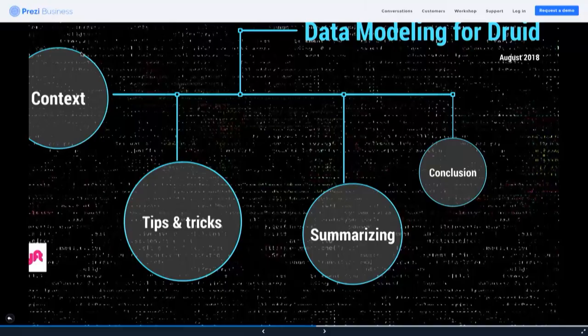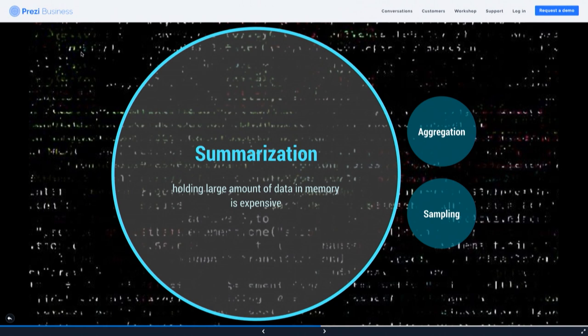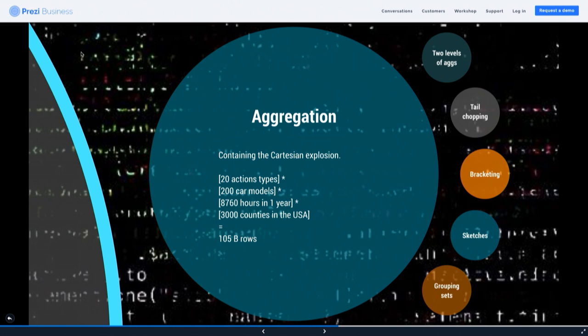Now I'm getting into summarization. Why summarize? Holding large amounts of data in memory is very expensive — at some point it defies the limits of physics. The two main ways to deal with space are aggregation and sampling. With aggregation, it's all about containing the cartesian explosion. A cartesian product is when you take two dimensions and make a matrix — 100 customers times 100 products gives 10,000 rows.